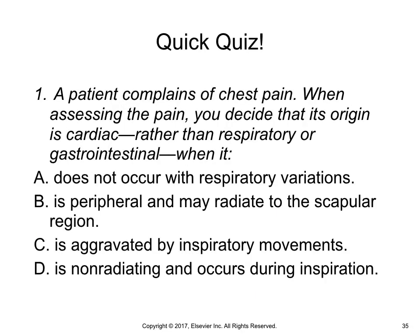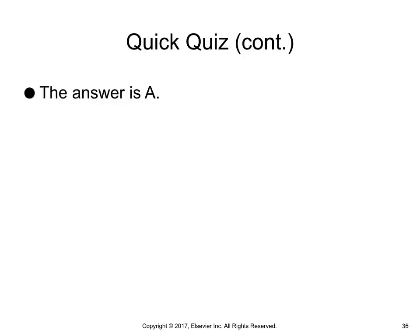Quick quiz: A patient complains of chest pain. When assessing the pain, you decide that its origin is cardiac rather than respiratory or gastrointestinal when it: (a) does not occur with respiratory variations, (b) is peripheral and may radiate to the scapular region, (c) is aggravated by inspiratory movements, or (d) is non-radiating and occurs during inspiration. The answer is (a): does not occur with respiratory variations.